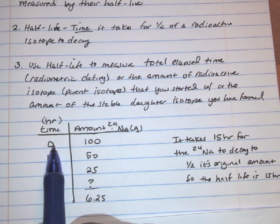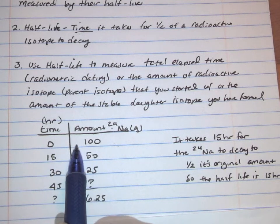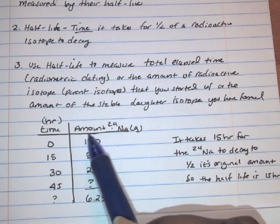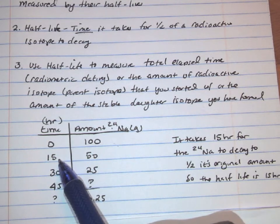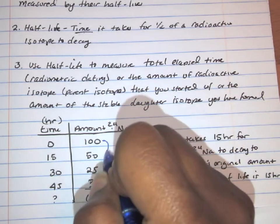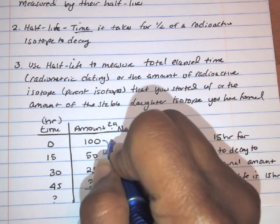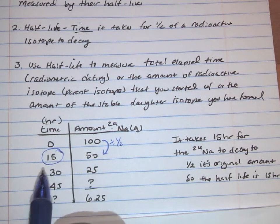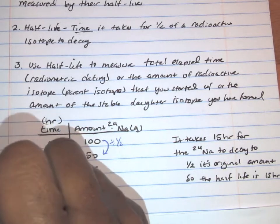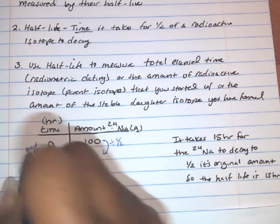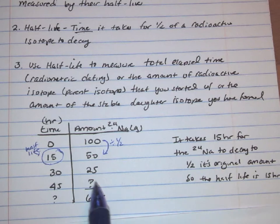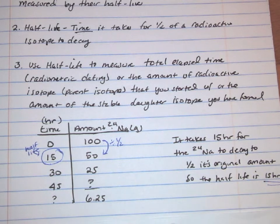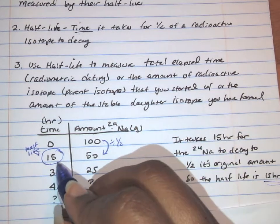We always start our time at zero because that's when no time has passed, giving us our initial amount. Looking at the table, we start off with 100 grams of our radioactive isotope, and in 15 hours we have 50 grams. So that means this is our Half-Life — the Half-Life is 15 hours, because it took 15 hours for half of it to decay.